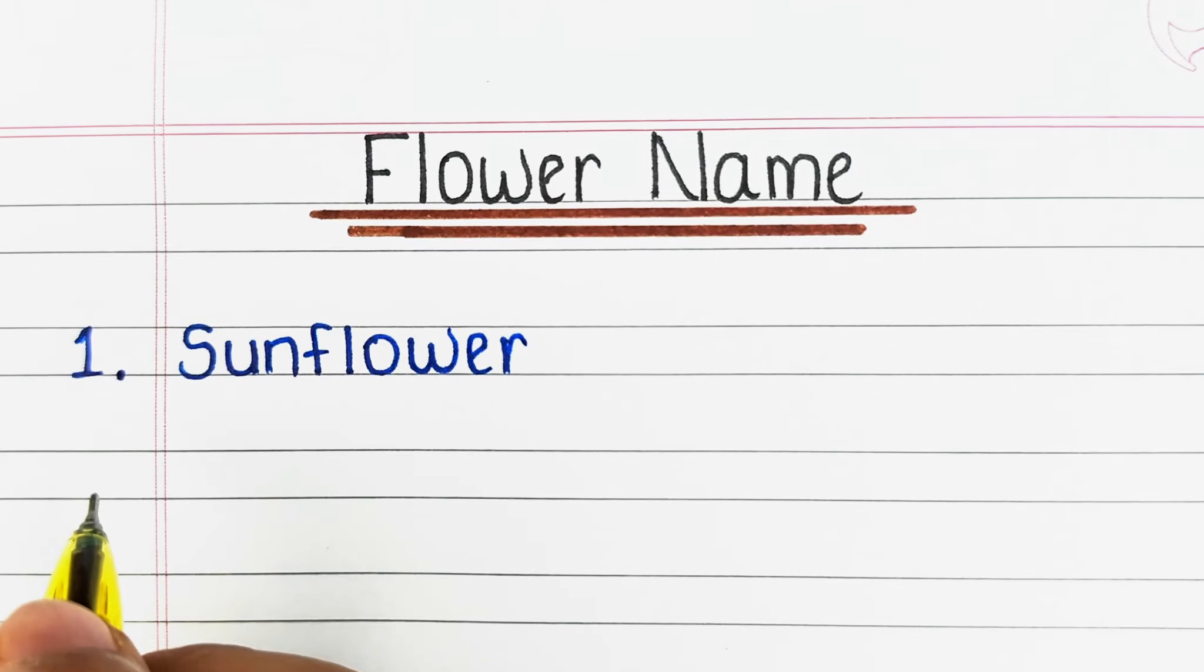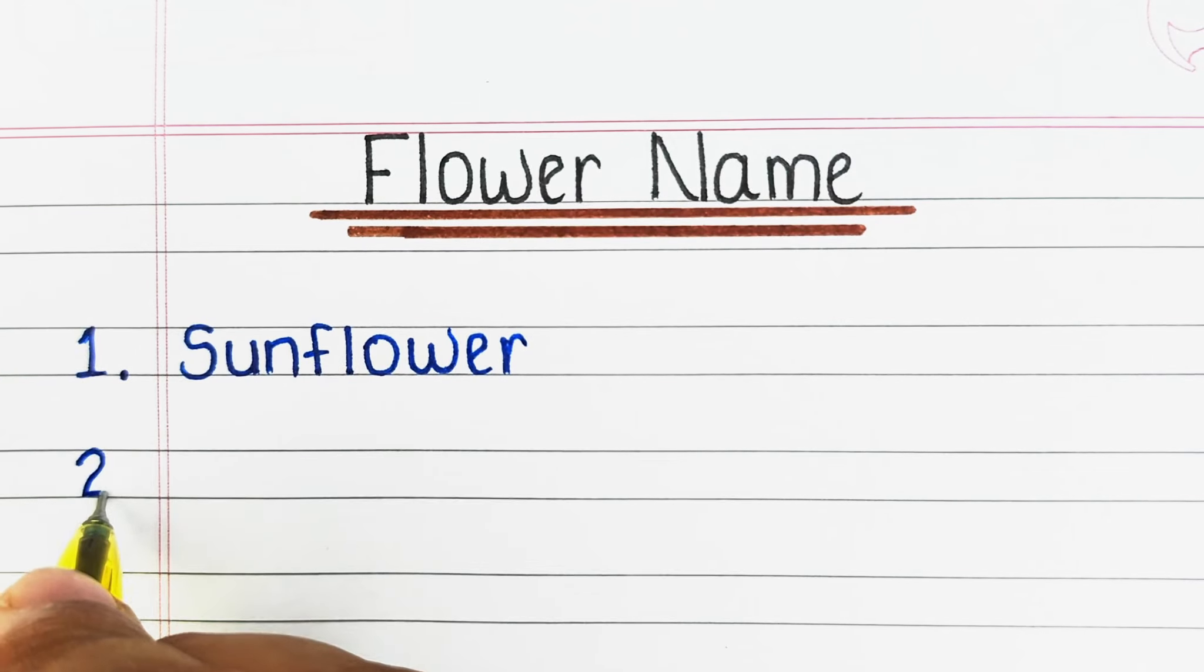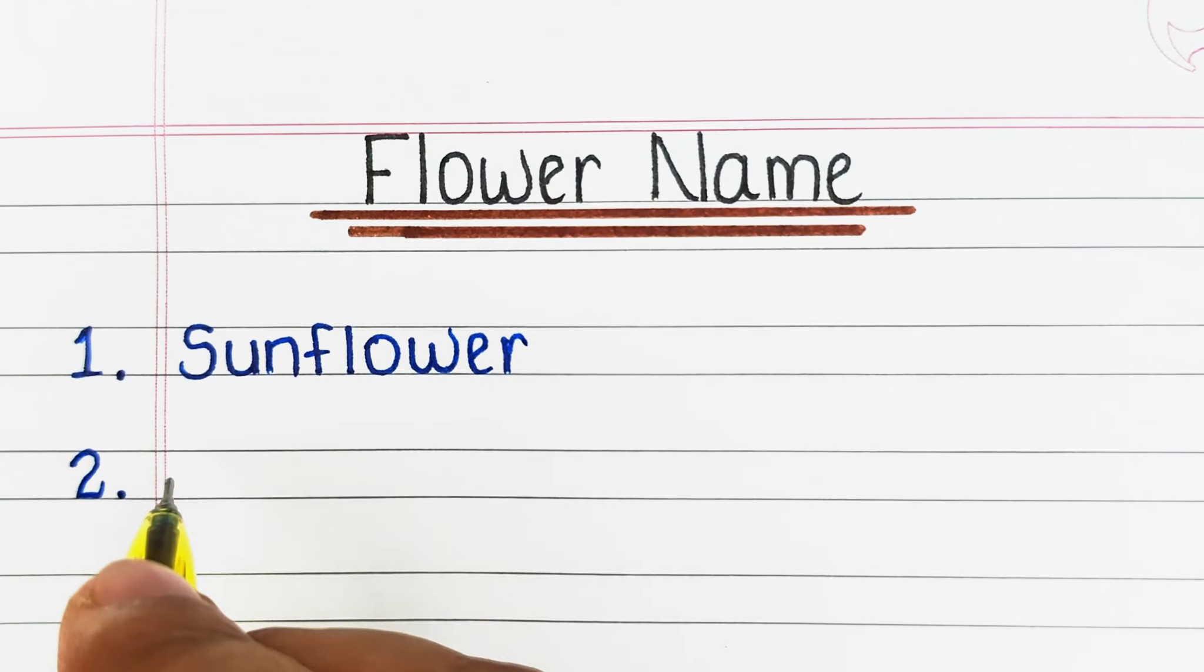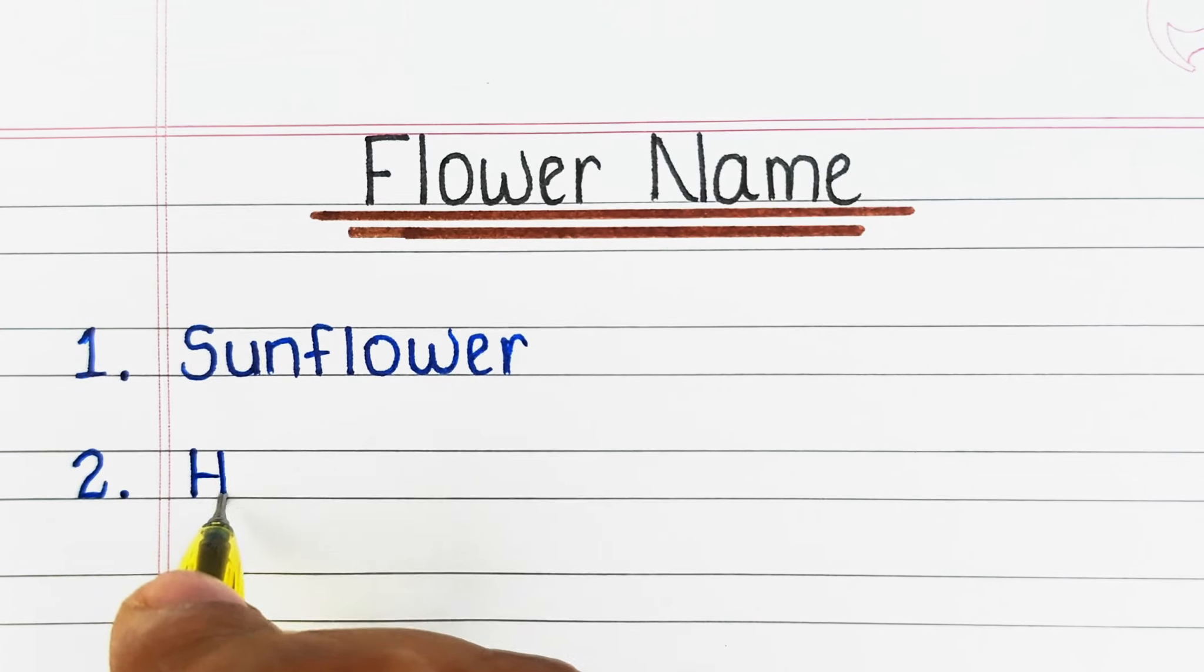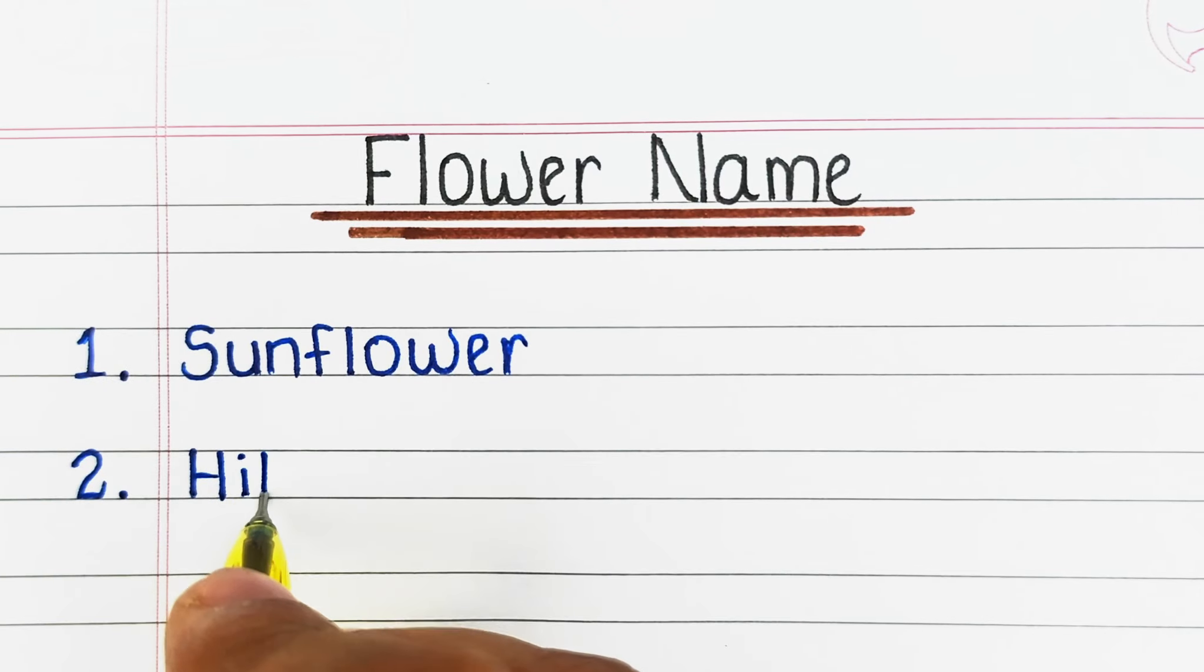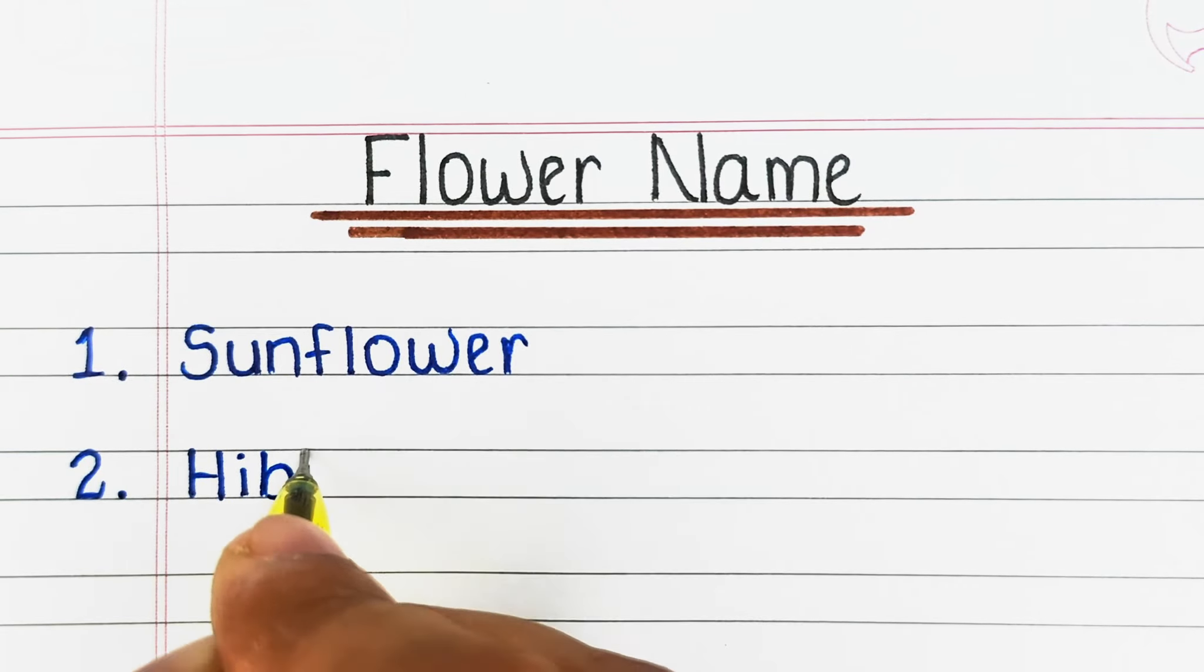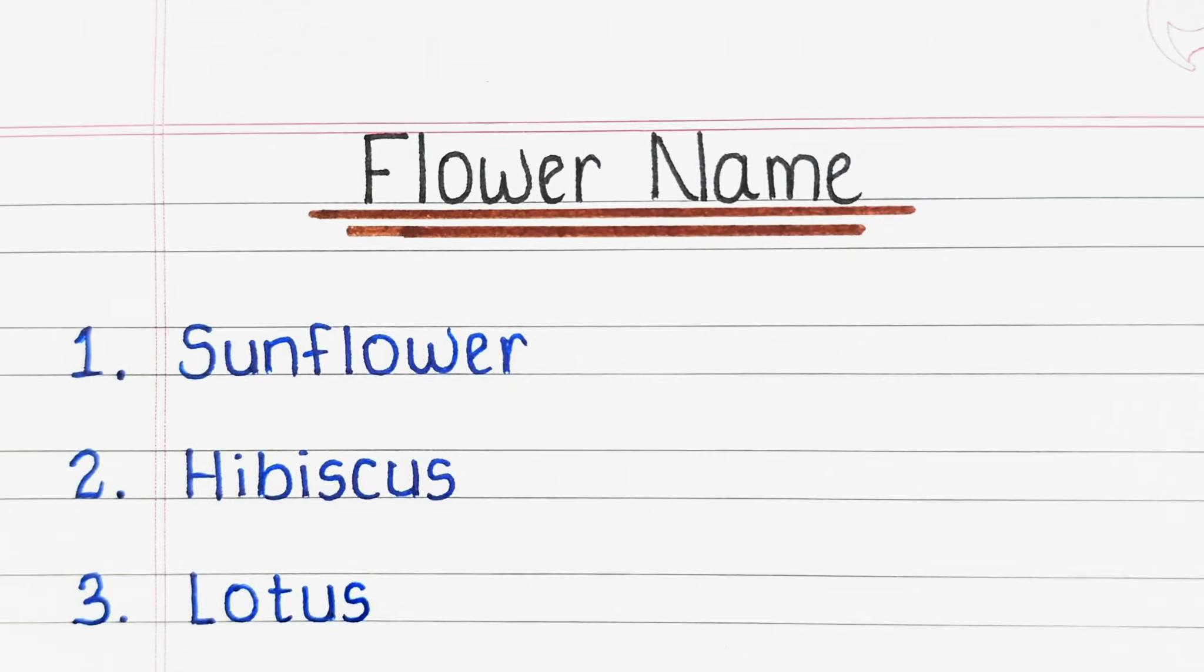First one is S-U-N-F-L-O-W-E-R, Sunflower. Second one is H-I-B-I-S-C-U-S, Hibiscus. Third one is L-O-T-U-S, Lotus.